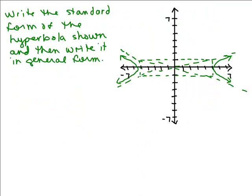So here's our first problem. Write the standard form of the hyperbola shown and then write it in general form. We have to look at this carefully and see where the intercepts are. This is going left and right, so that means the X squared part is positive. Since the intercepts are at 5 and negative 5, that's 5 squared, or you could write 25.